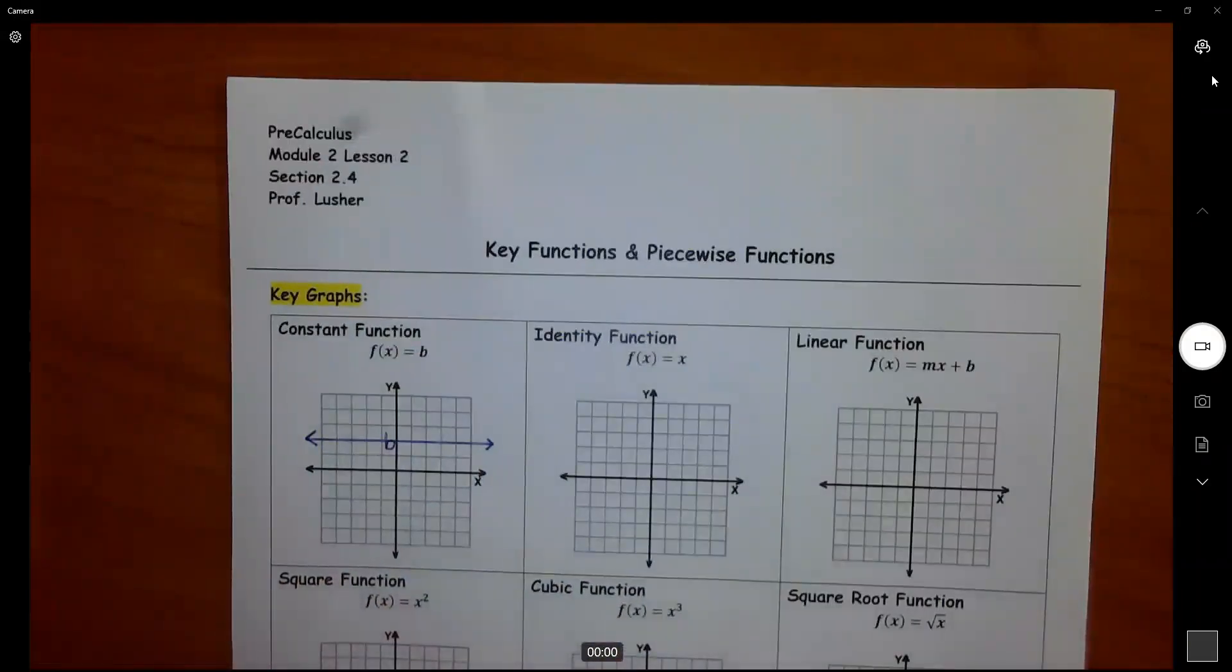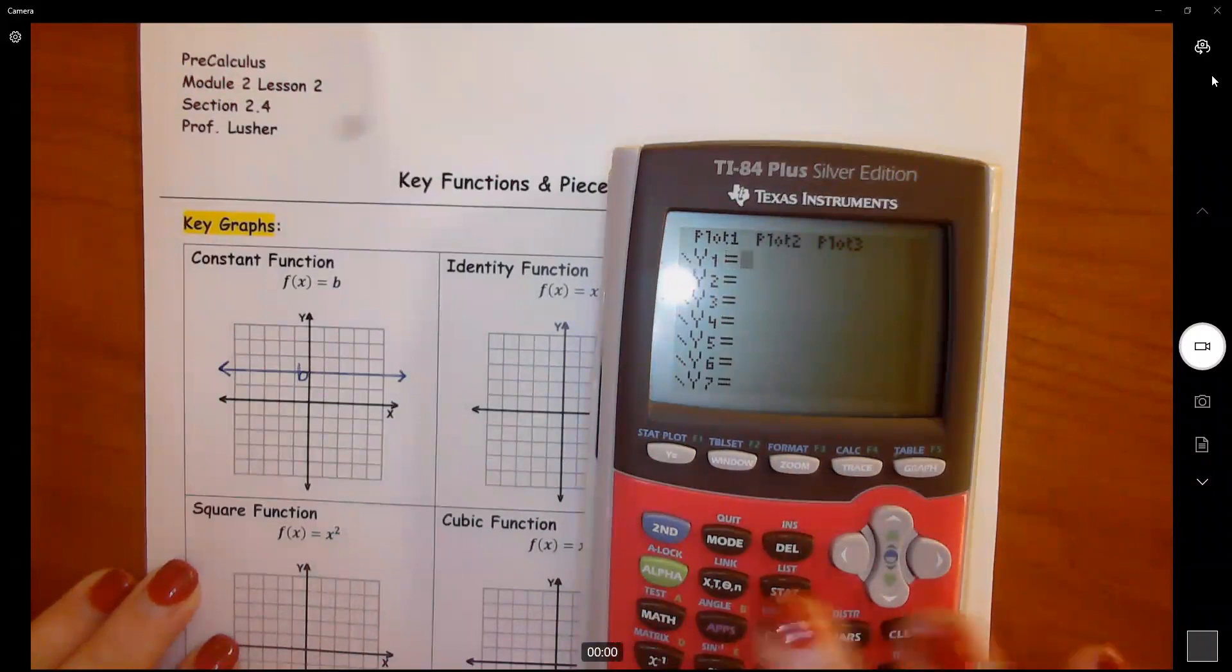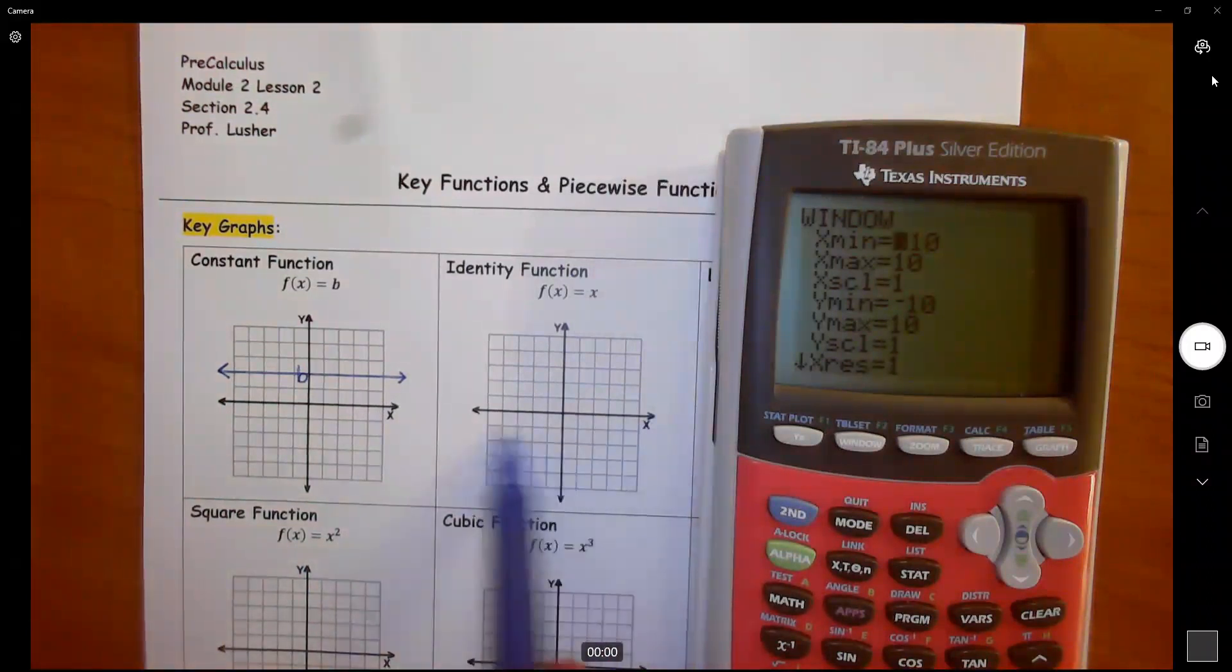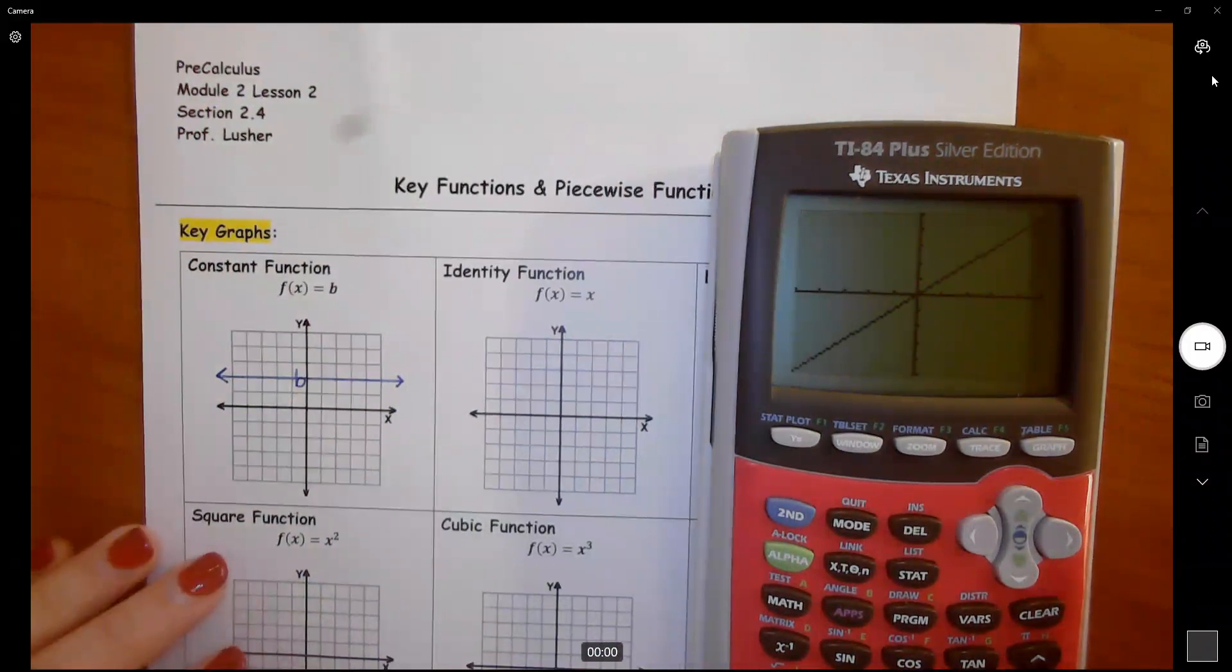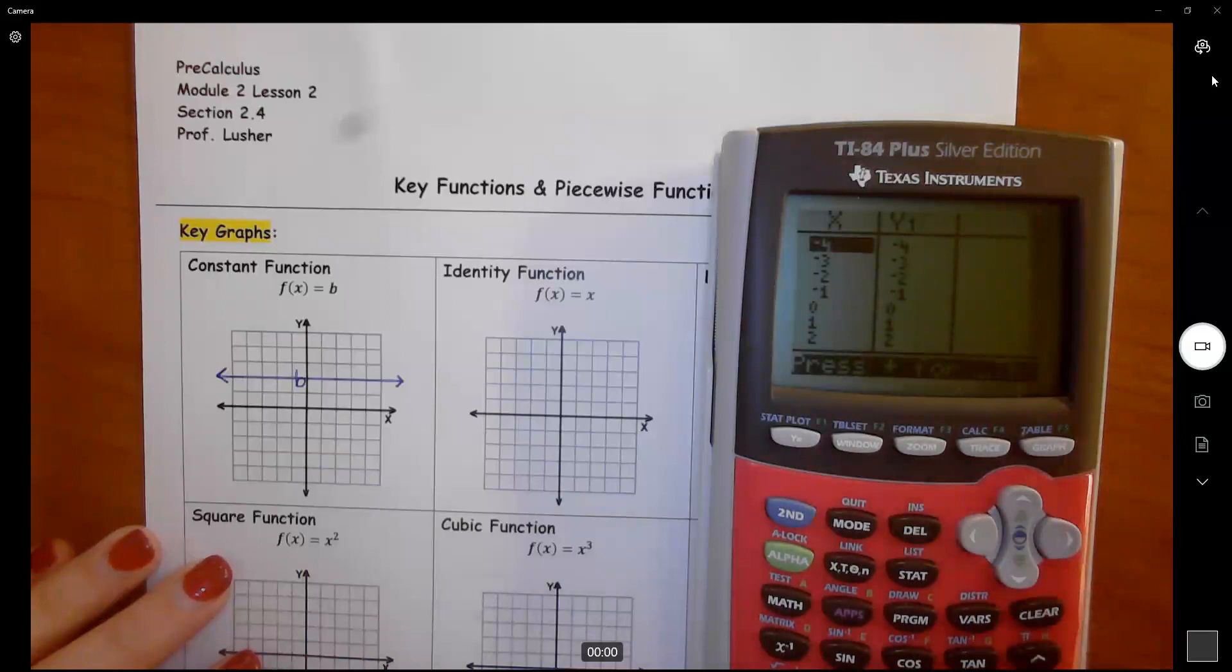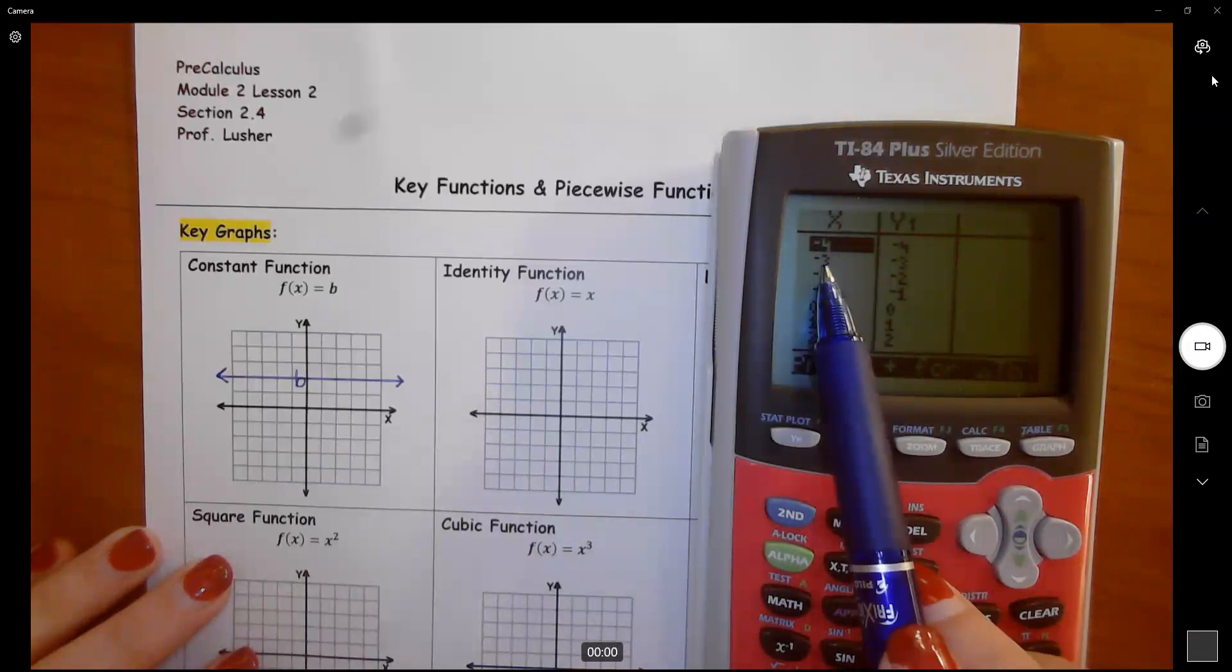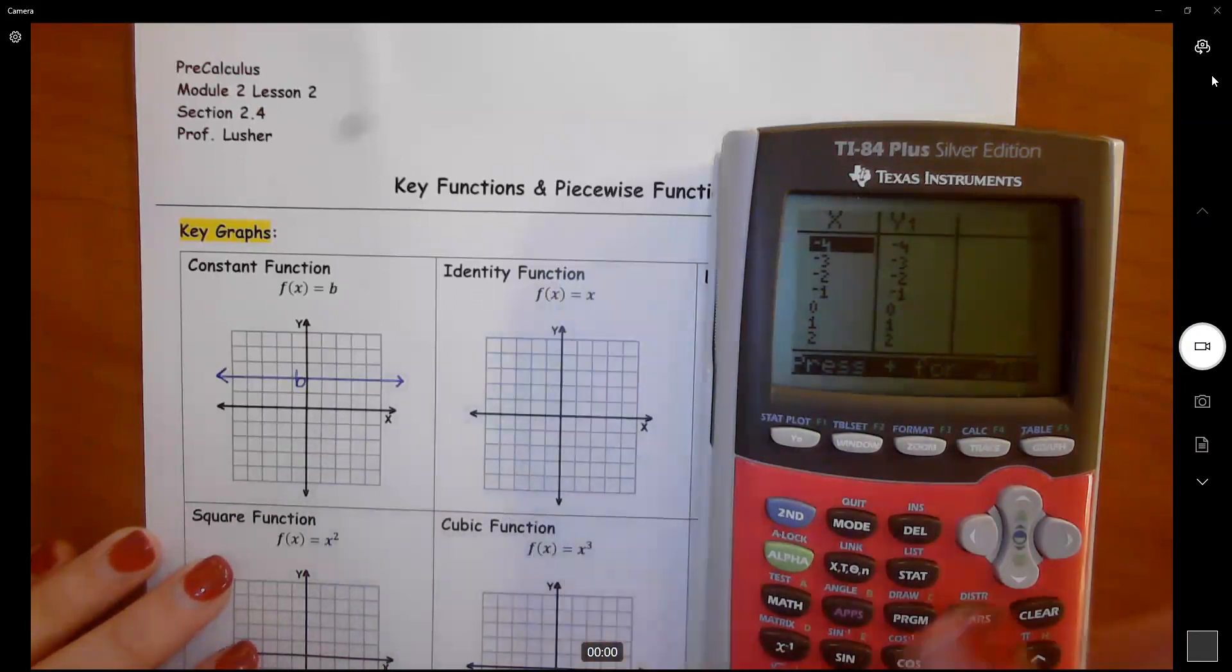An identity function, if we just have x, I'm going to change my window here because my graph is negative 5 to 5 on both x and y. I'm going to change this just so my graph on my calculator will match my graph on my paper. It's just a straight diagonal line. If I go to table here, I can see if you put in negative 4, your y is negative 4. If you put in negative 3, your y is negative 3. That's why this is an identity function. Whatever you're putting in is the same thing you're getting out.